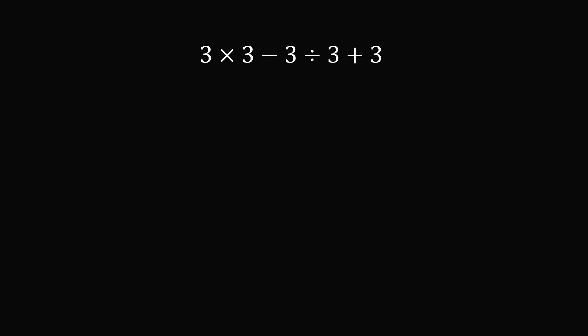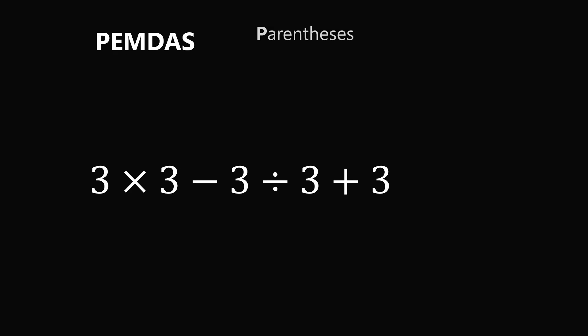So what is the correct answer to 3 times 3 minus 3 divided by 3 plus 3? A convenient way to evaluate this expression is to use the acronym PEMDAS. This refers to parentheses, then exponents, then multiplication and division, and finally addition and subtraction.